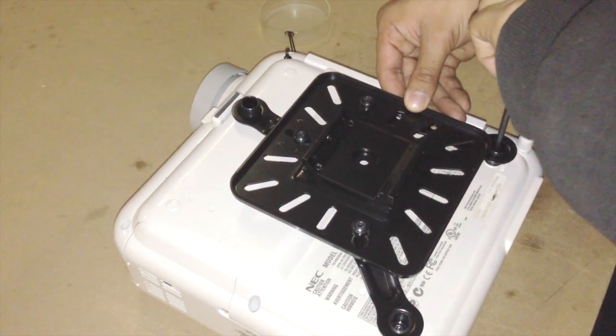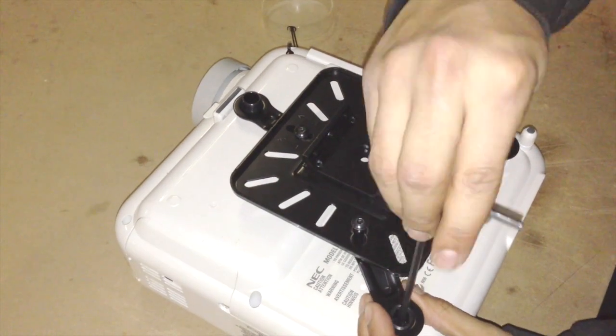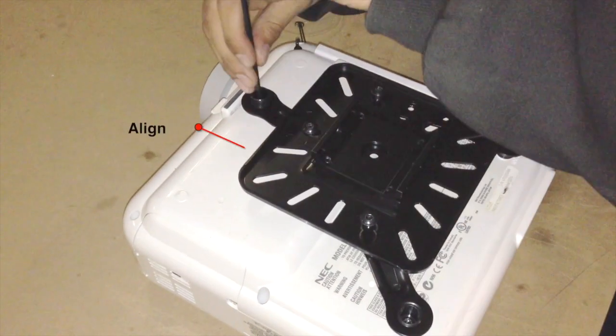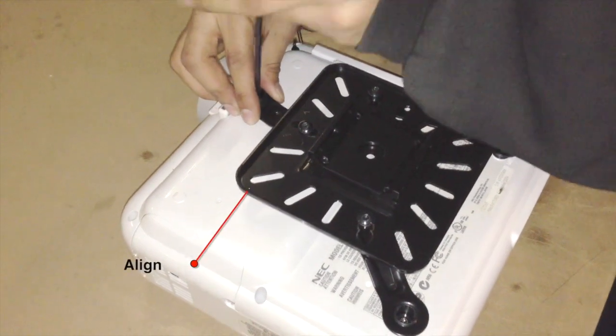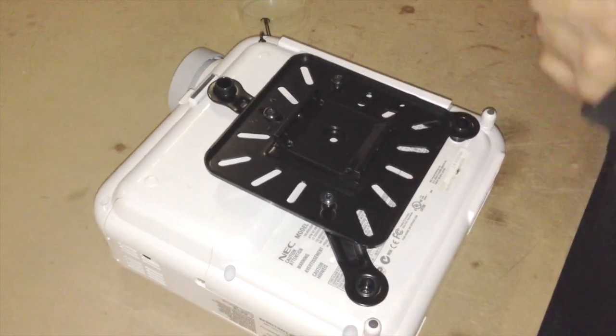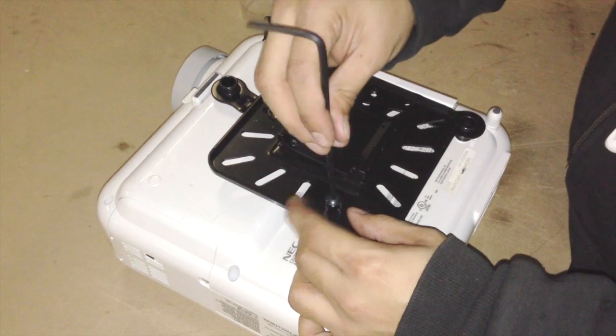Attach the universal plate and tighten all the screws. Align the universal plate by eye as best as possible before the screws are tightened. Do not worry if the alignment is not perfect. Any imperfections will be corrected during picture alignment.